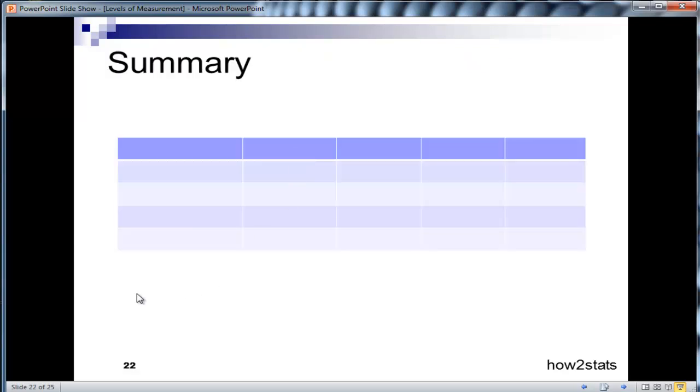Now let's do a summary across all four levels of measurement. We have nominal, ordinal, interval, and ratio. The four broadest categories that are useful to discriminate across the four levels of measurement are identity, order, equal intervals, and absolute zero.